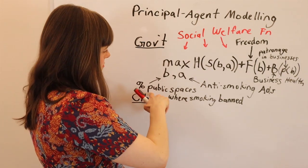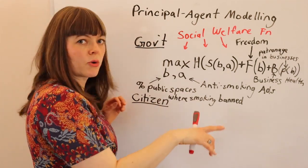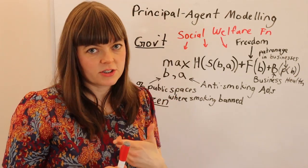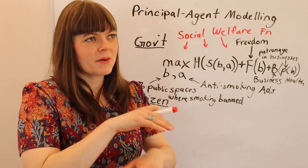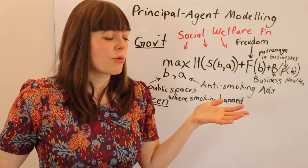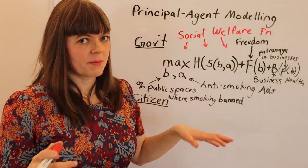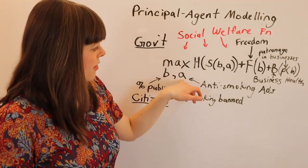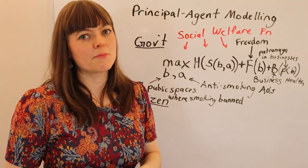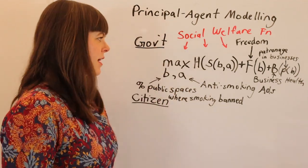The first option, B, is the percentage of public spaces where smoking is banned. You could ban smoking in public parks, in restaurants, in airports. The government can figure out the most important places to ban smoking, or they could ban it everywhere. The second approach would be anti-smoking advertisements that the government might put on TV — paying for those advertisements to try to change the way the population feels about smoking.